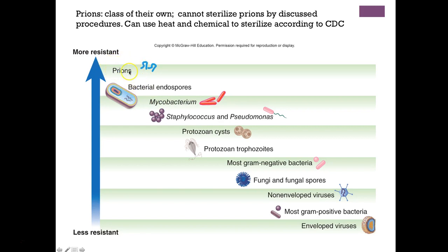Prions are a class of their own. You cannot sterilize prions using the procedures discussed in this chapter — they are resistant to heat and chemicals. We can try a combination of agents to attempt sterilization, but it is very difficult. The CDC must be contacted if anything is contaminated by prions to receive specific sterilization instructions.